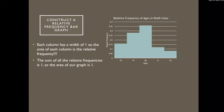Here it is. One thing I want to talk about, especially in this case, is that each of the columns has a width of 1. So that means that the area of each column is the relative frequency of the column. 1 times 0.16 is going to be the area. This column has an area of 0.16.